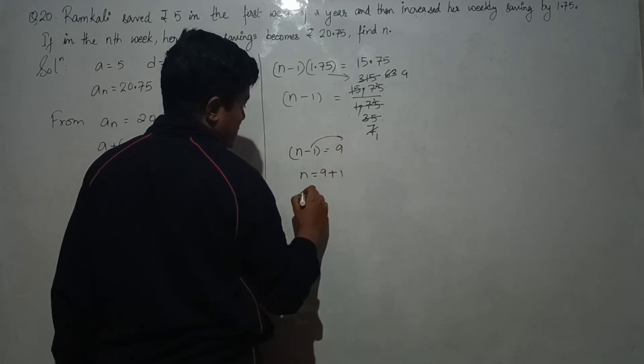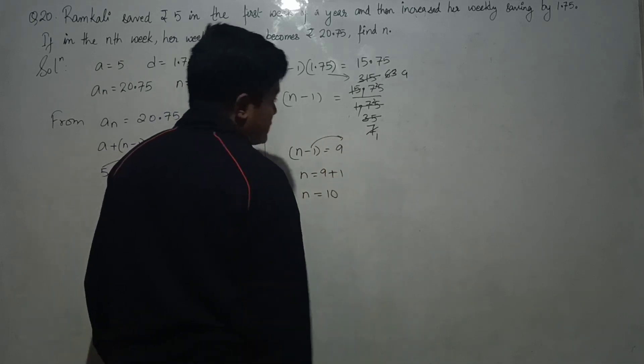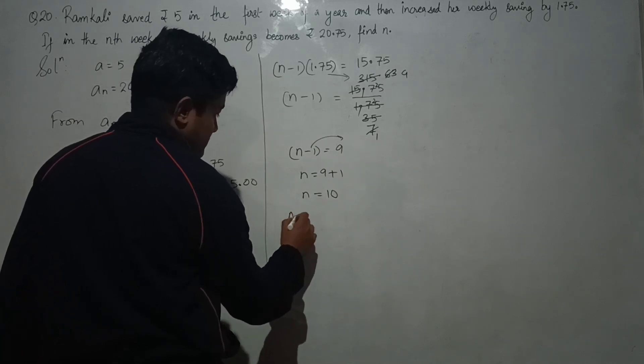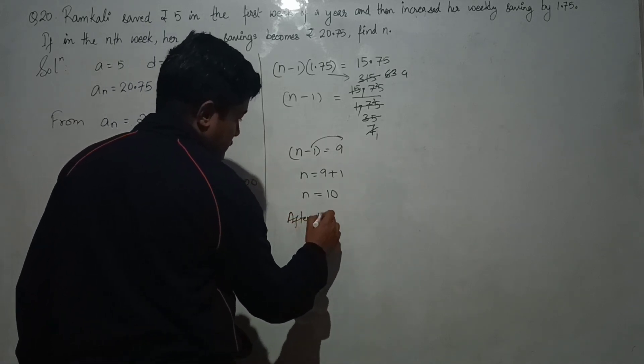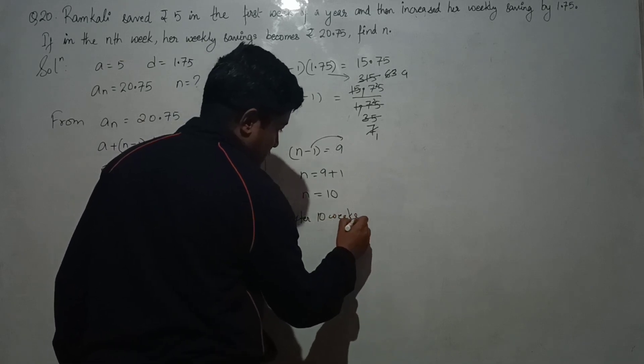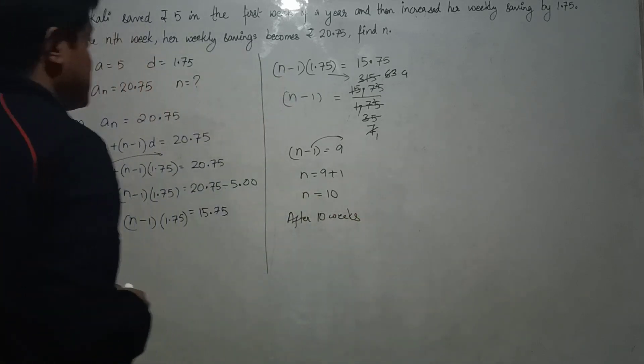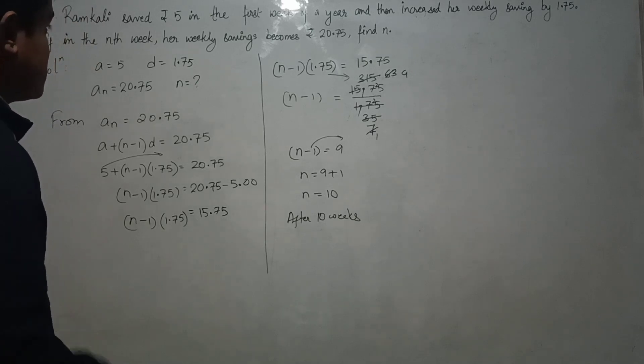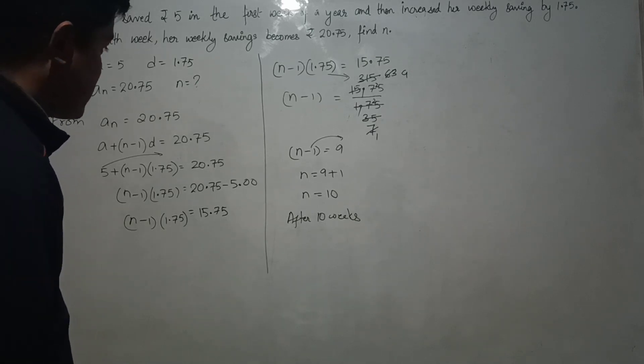So n equals 9 plus 1, which is 10. After ten weeks, her savings become rupees 20.75.